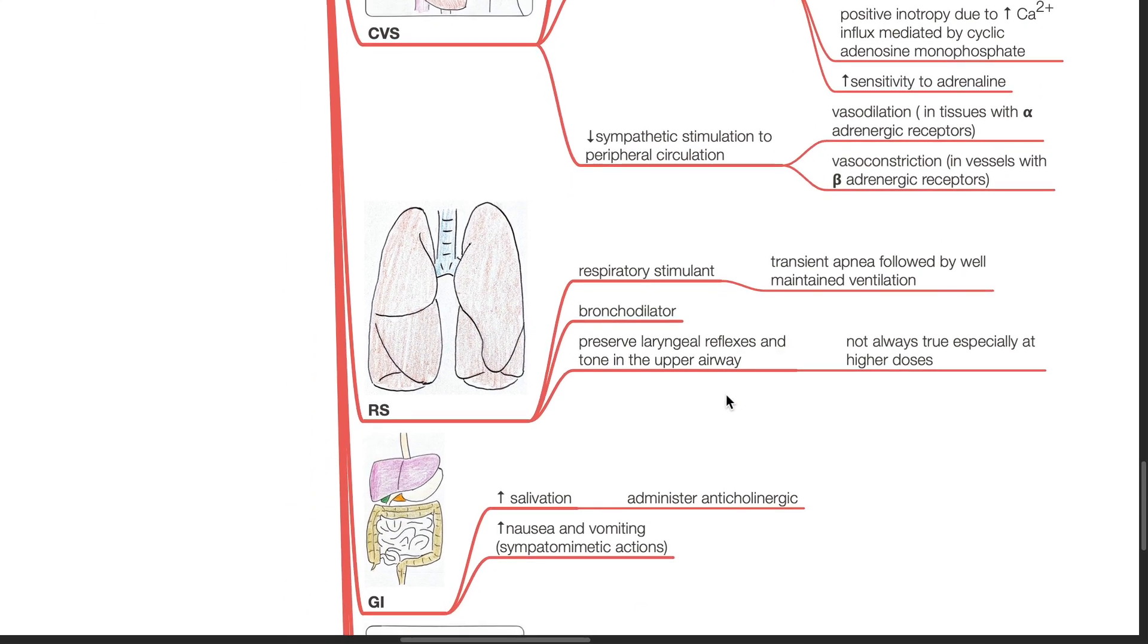Respiratory system. Ketamine is a respiratory stimulant. Transient apnea is followed by well-maintained ventilation. Ketamine has bronchodilatory effects. There is preservation of laryngeal reflexes and tone in the upper airway. However, this is not always true, especially at higher doses of ketamine.